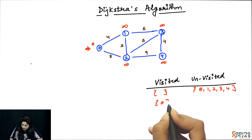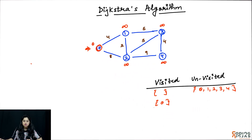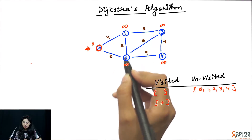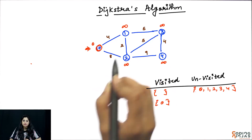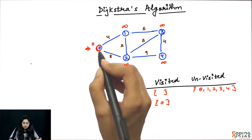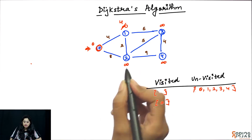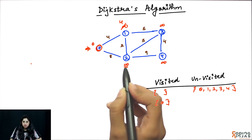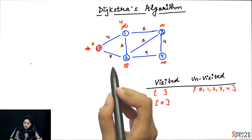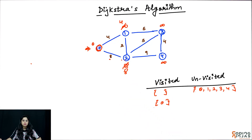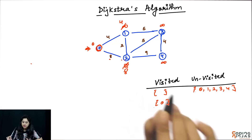Zero visit kar chukke hai. Next target hai, zero ke jo neighbors hai, adjacent vertices hai, unhye hum explore karte hai — un tak ka path nikaalte hai. Zero ke neighbors kya kya hai — one and two. Agar hum zero ke through one tak pahunche hai, tho joh path hai uski cost kya hone wali hai: zero se zero tak ki path zero hai, zero se one jo edge hai uski weight four hai, tho zero se one paunchne ki total cost four hone wali hai. Same two ke liye: zero se two, pehle infinity hai distance, agar hum zero ke through pahunchenge tho two tak ki edge ka weight is eight, tho hum eight units mein two tak reach kar sakti hai. Hum ne zero ke neighbors explore kare aur unke distance update kar di hai.